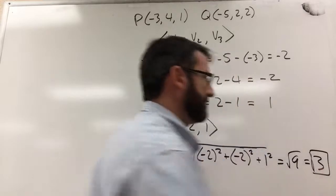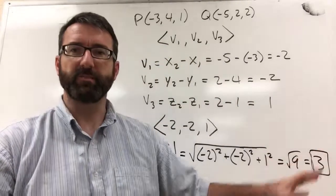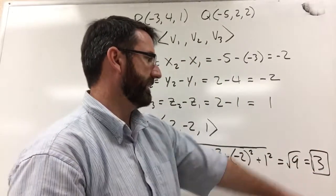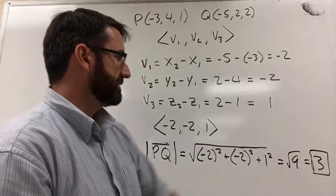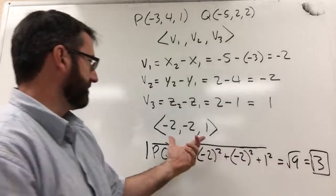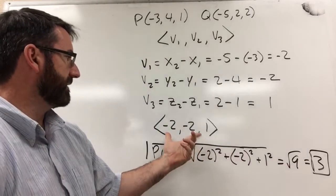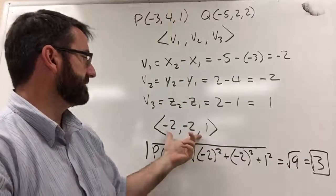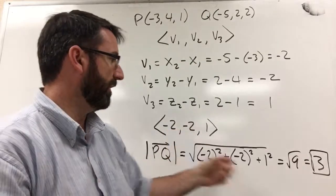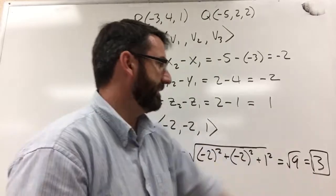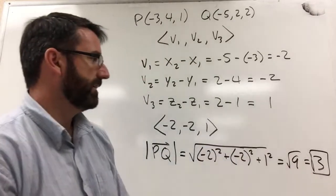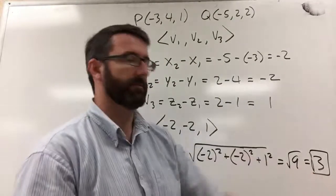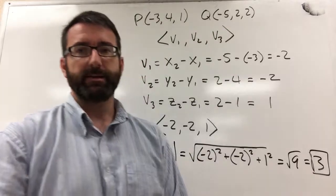The square root of 9 is plus or minus 3, but since we're talking about distances we take the positive value. So the component form of this vector is ⟨-2, -2, 1⟩ and the length of the vector is 3.